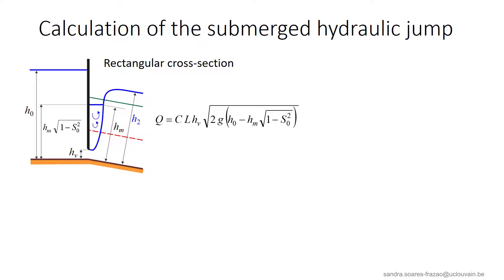In the calculation of a hydraulic jump, we usually consider a rectangular cross-section at the gate, and we usually know the upstream water depth H0 and the gate opening HV. The discharge is determined as written here, using Torricelli's formula adapted to our situation. So we see that we have three unknowns.